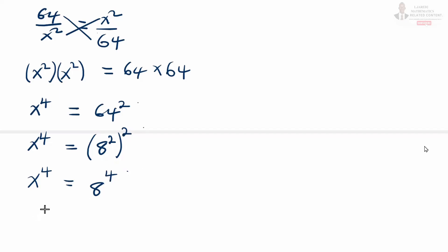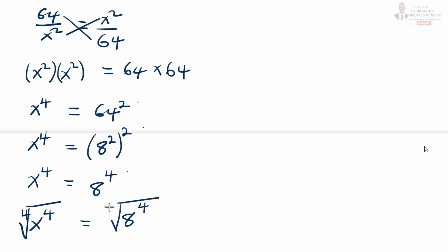So to get the value of x, we are going to take the fourth root on both sides. We introduce the fourth root on both sides of the equal sign, whereby we have x to the power 4 equal to 8 raised to power 4. So we are introducing the fourth root on both sides, and as we introduce the fourth root, we have to put plus or minus, as with the square root.